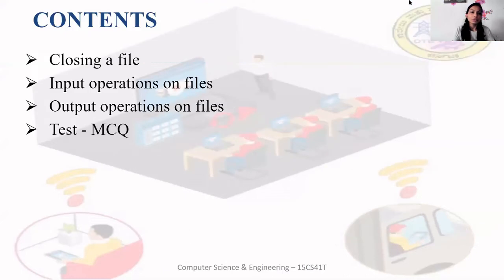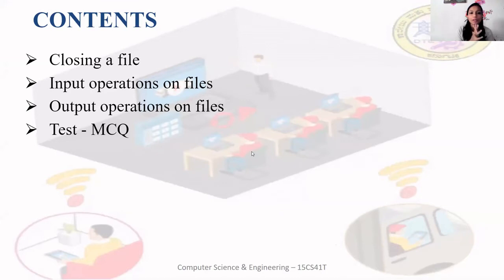The contents of today's class are: how to close a file using the fclose function, and which are the different input and output operations on a file. Input means reading from the file, output means writing to the file. Then we will solve some quiz questions.